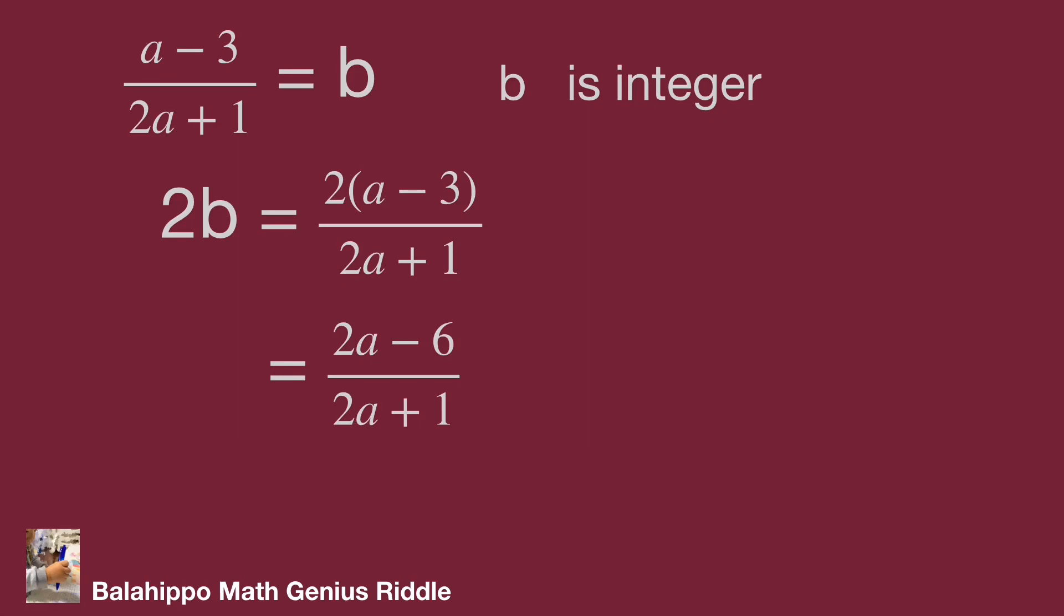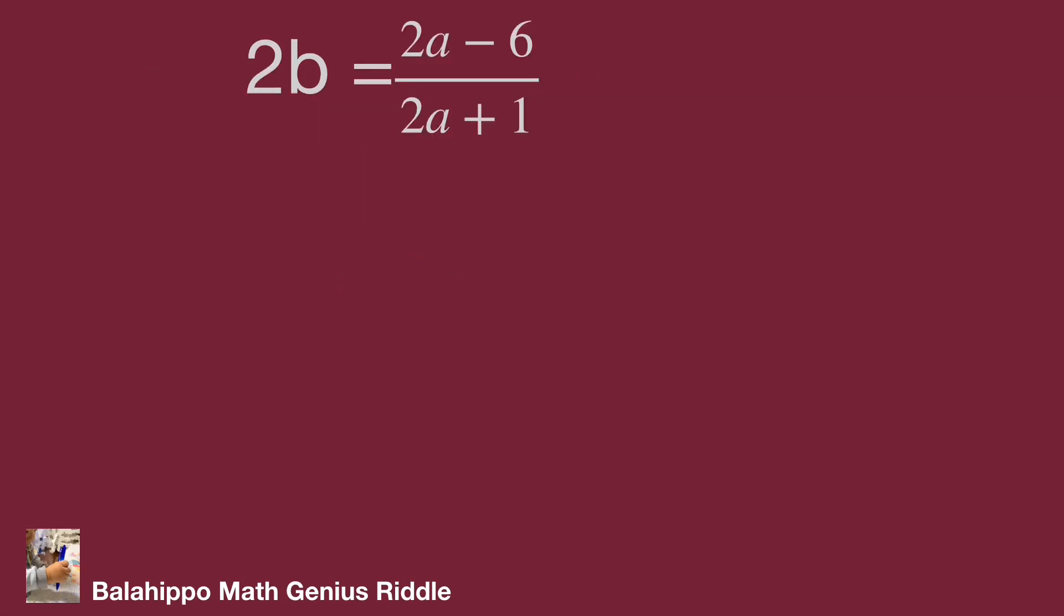And then adjust the 2a plus 1 factor. It becomes 2a plus 1 minus 7 over 2a plus 1. Simplify this to become 1 minus 7 over 2a plus 1.